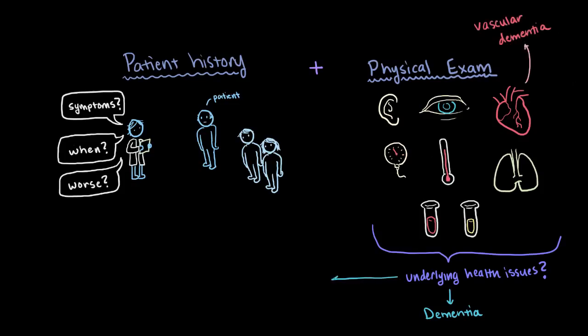Or if there's another condition that's mimicking symptoms of dementia, since other conditions like anemia or depression, infection, diabetes, kidney disease, and others can all cause dementia-like symptoms, like confused thinking and memory problems.